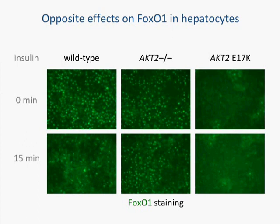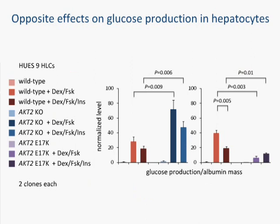We next investigated the consequence of these mutations on glucose production in hepatocytes. On the left, our knockout cell lines that have no AKT2 — in contrast to wild-type cells stimulated with dexamethasone and forskolin that produce a substantial amount of glucose — these are just off the charts, producing glucose in twice the abundance, and this is not easily regulatable by insulin because they're almost resistant to insulin signaling. On the right, the constitutively active form of AKT2 E17K — these cells, even in the presence of dexamethasone and forskolin, don't really produce any glucose because they're constitutively seeing insulin signaling. And so again, they're also insensitive to exogenous insulin.